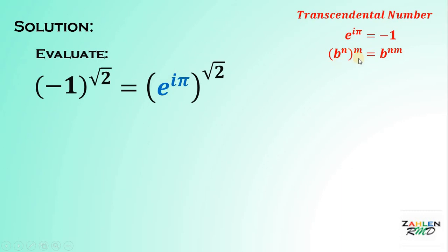Now, simplify using laws of exponents. If we have B raised to N raised to the power of M, it is equal to B raised to N multiplied by M. We have E raised to I pi multiplied by the square root of 2.